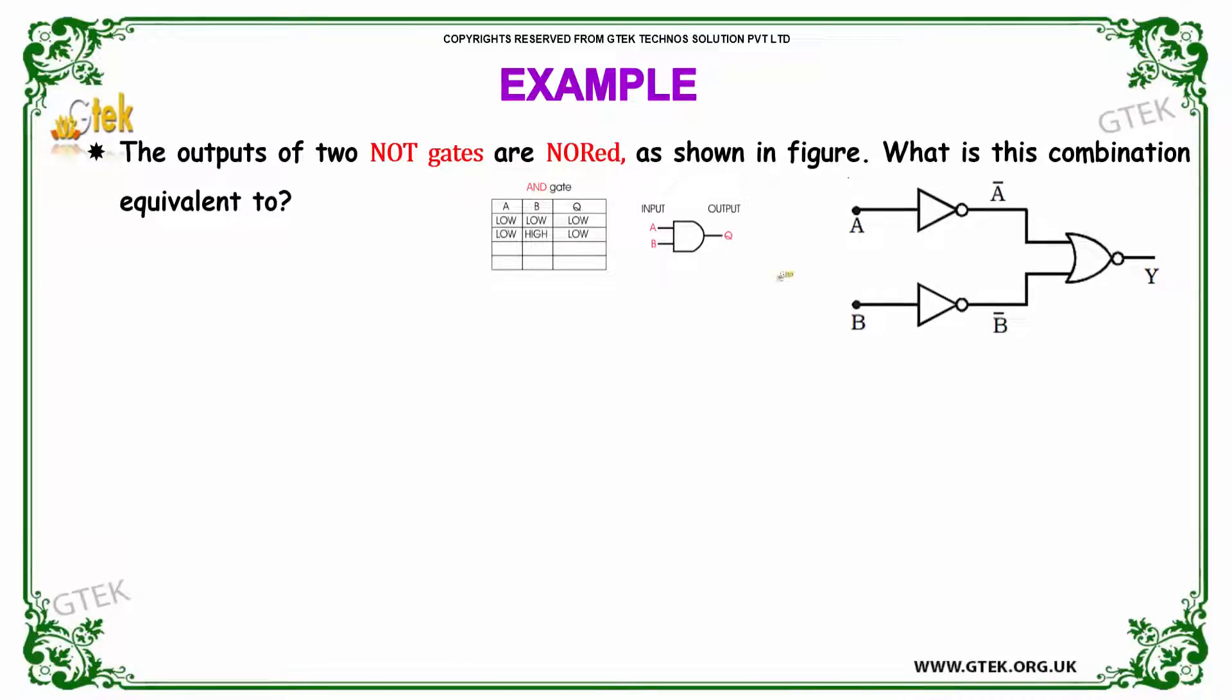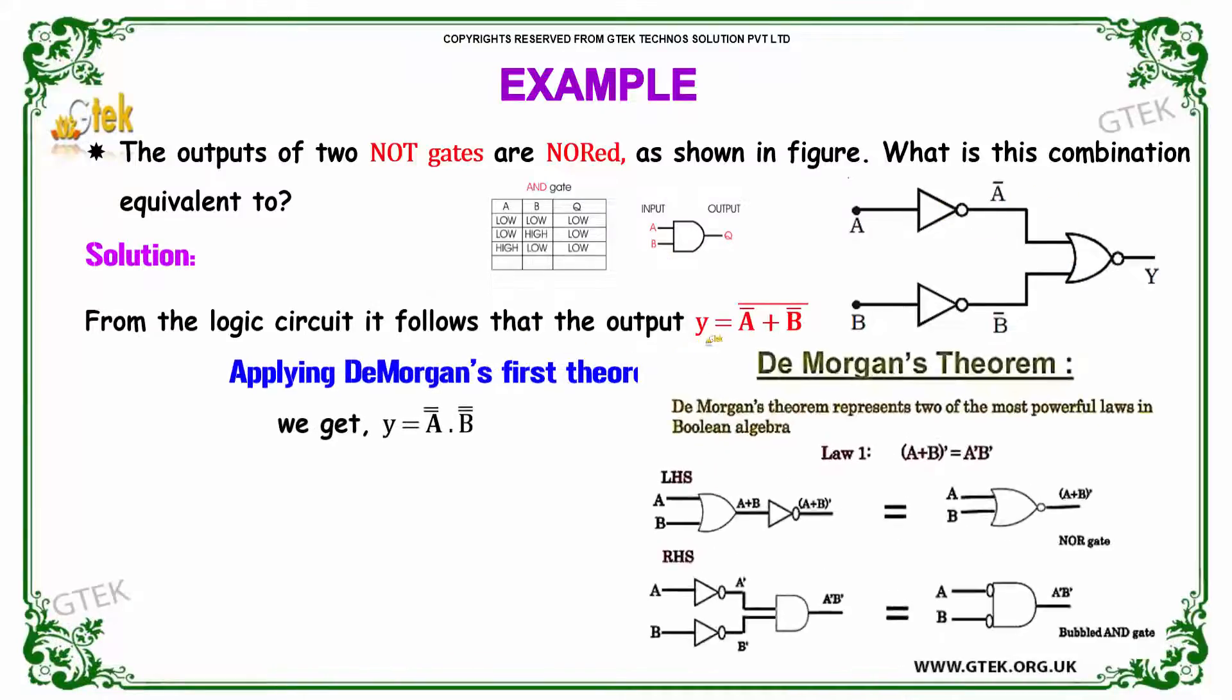The output of two NOT gates are NOT. What is this combination equivalent to? The problem is Y is equal to A complement plus B complement whole complement.